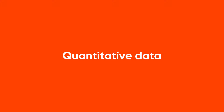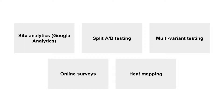Quantitative data is information about quantities — that is, information that can be measured and written down with numbers. Google Analytics is a widely used tool for almost every project, and will almost be everything you need to help paint a better picture of what your users are doing.